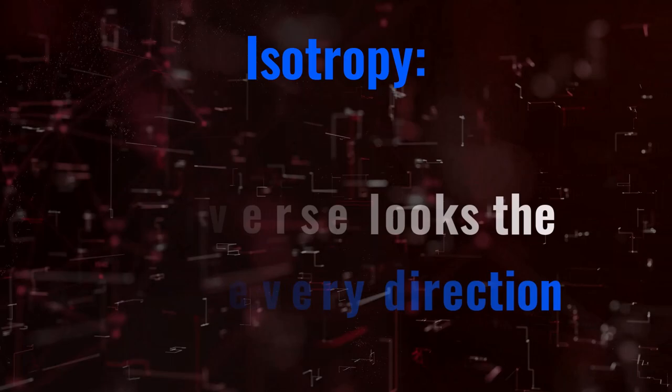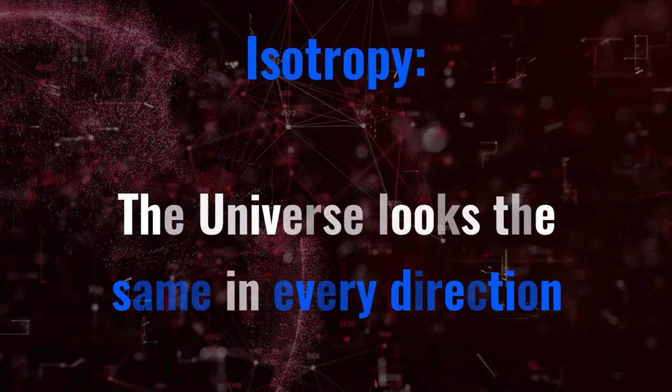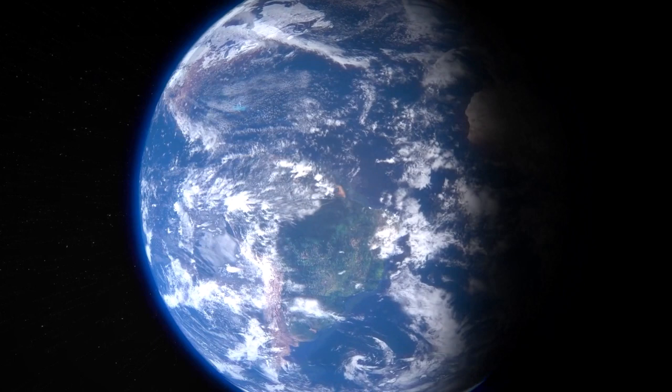Looking out from Earth, we pretty much see the same things everywhere: empty voids, stars and galaxies evenly distributed, so our universe is also isotropic. Fundamentally, this means that our place in the universe is not special. We're not at its centre, as there is no centre. We are just one point of infinitely many of the same.